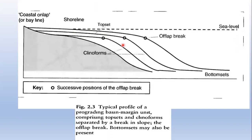The topset is followed by the clinoforms. Clinoforms are the more steeply dipping portion of the basin margin profile, commonly with a gradient greater than one degree. They develop on the basinward side of the topset and contain deep water depositional systems characteristic of the slope environment.